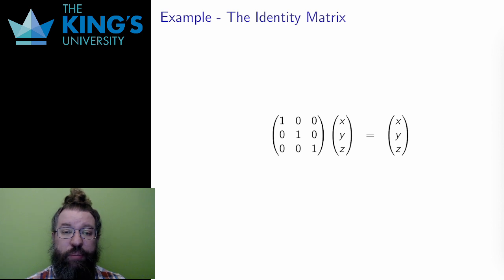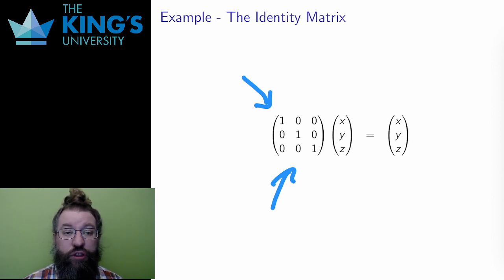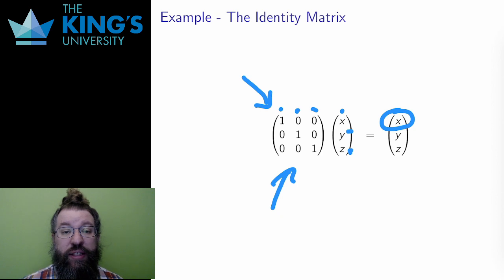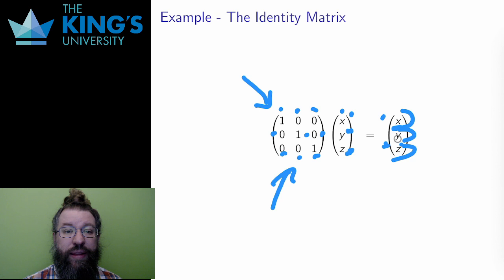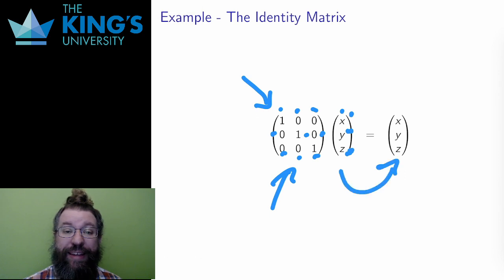I also defined the identity matrix — the matrix with ones on the diagonal and zeros elsewhere. The first row gives 1·x + 0·y + 0·z = x, the second row gives 0·x + 1·y + 0·z = y, and the third row gives 0·x + 0·y + 1·z = z. The result is the same vector I started with. The identity matrix gives you back what you had — it is like multiplying by one, and the identity transformation is the one that leaves the input unchanged.